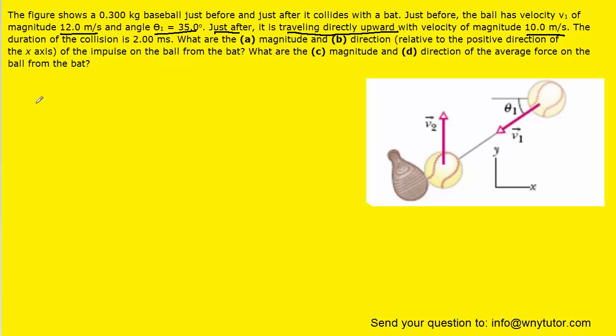For part C, to find the magnitude of the average force, we can consider the following equation. We have the impulse equaling the average force multiplied by the time interval. We can divide both sides by delta T to solve for the average force. And so all we have to do is take the magnitude of the impulse that we had found and then divide it by the time.